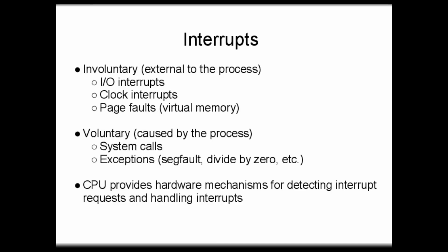One situation in which a mode switch might occur is when something called an interrupt happens. An interrupt is a situation in which the currently executing code is interrupted so that an event can be handled by the operating system. Interrupts can fall into two categories. Involuntary interrupts are external to running processes — these consist of things such as IO interrupts generated when you press a key on the keyboard, clock interrupts which are timer mechanisms scheduled to go off at a particular time, and page faults which have to do with the virtual memory subsystem. Interrupts can also be voluntary, created by a process that's running — system calls and exceptions such as segfault or divide-by-zero can result in interrupts as well.